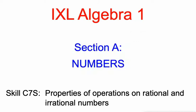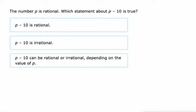Hi-de-li-ho, Mr. Kaczynski with you. Properties of operations on rational and irrational numbers, and this is part of Section A of IXL's Algebra 1 skills. Here we go.